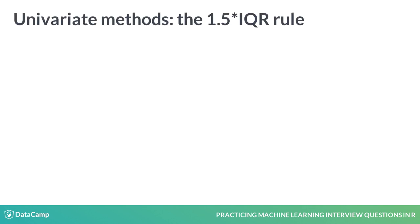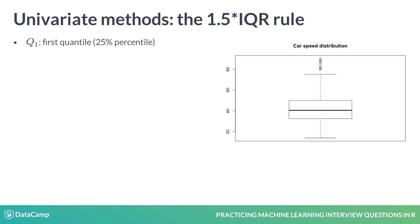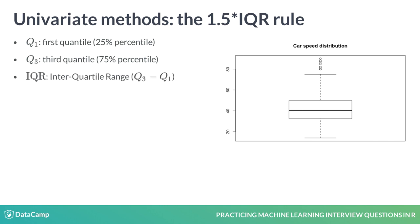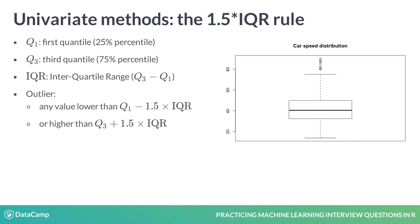Another popular method is the 1.5 IQR rule. This method can be applied regardless of your underlying data distribution. The interquartile range, or IQR, is the difference between the third and the first quartiles of your variable. Any observation below Q1 minus 1.5 IQR, or above Q3 plus 1.5 IQR, is considered an outlier.